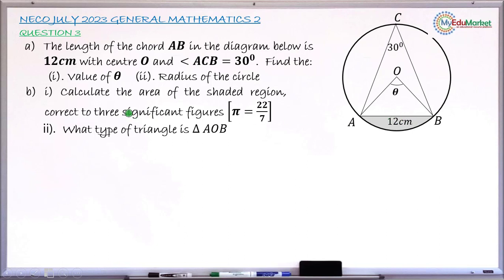You have to write your answer correct to 3 significant figures, taking π as 22/7. And question B also asks: what type of triangle is triangle AOB?